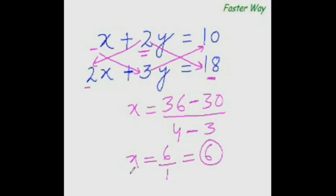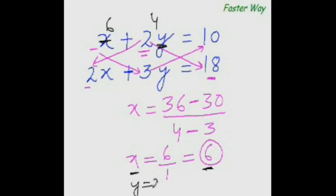Now once you have the value of one variable, finding the other is very easy. Substitute x equals 6 in one of the two equations. You know that 6 plus something equals 10, so 6 plus 4 equals 10, and 2 times what equals 4 — 2 times 2 equals 4, so y equal to 2. You can do this mentally. Let's do it again — this time mentally.